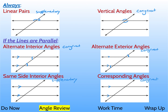Same side interior angles are supplementary — same side, supplementary — they just add up to 180. They're both on the left or both on the right. And corresponding angles are always congruent to each other when you have parallel lines. The best way to look at it: look at the intersection — the angle marked is in the top right. The one that corresponds to it is down at the other intersection, also in the top right.